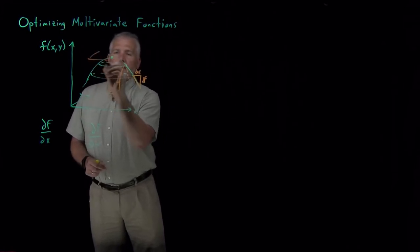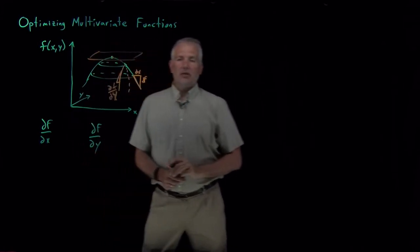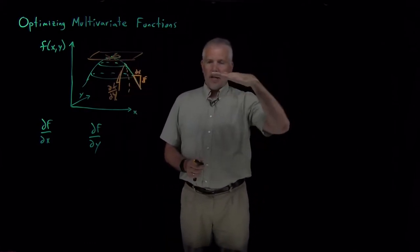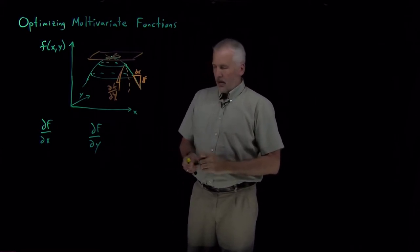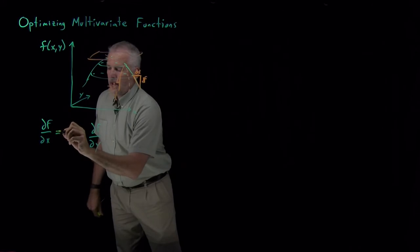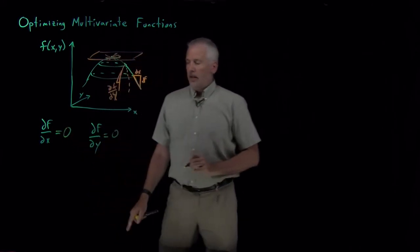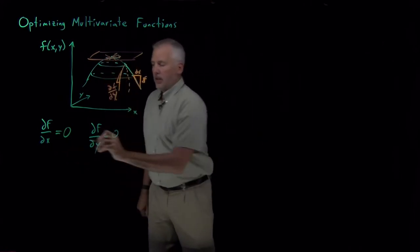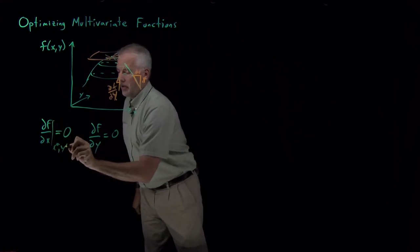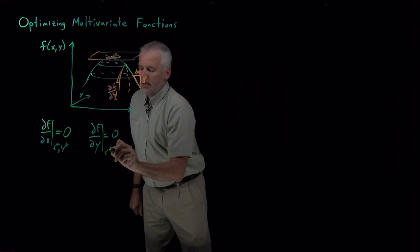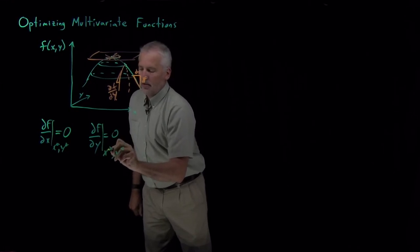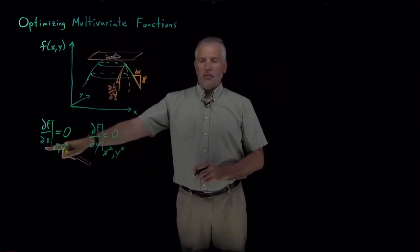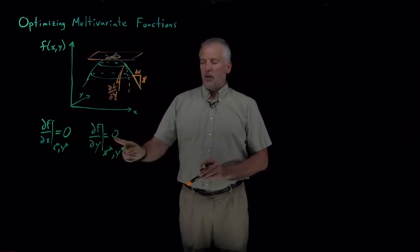But of course, the important thing about the maximum is when I'm sitting at the top of the hill right here, it doesn't matter whether I look in this direction or this direction. The top of the hill is flat in every direction. So the maximum or the minimum of the function will obey the requirement that df/dx, the derivative of the function in the x direction, is zero. When I move in this direction, the slope is zero at the maximum. And likewise, the derivative of the function when I move in the y direction is also flat. It's flat in every direction, regardless of whether I'm moving in x or whether I'm moving in y. The derivatives in all these directions have to be zero.